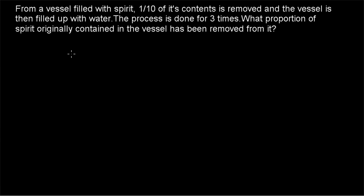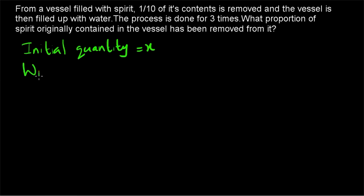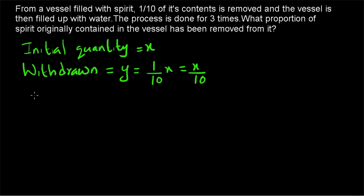Now let's go to the second question. From a vessel filled with spirit, 1 by 10 of its contents is removed and the vessel is then filled up with water. The process is done 3 times. What proportion of the spirit originally contained in the vessel has been removed? We are given only these parameters: y equals 1 by 10 of x, so y equals x by 10, and n equals 3.